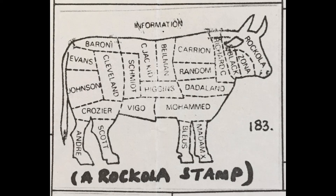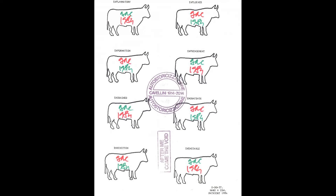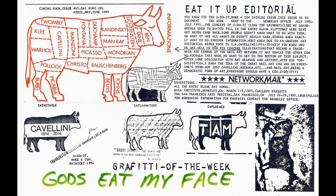It's interesting to see the worksheet of eight cow outlines that Joey, or Tom, made, because the eight contour drawings all differ slightly, though the size is consistent. A list of alphabetical words titles each cow: Inflammatory, Influence, Information, Infringement, Ingrained, Ingratiate, Inhibition, Inimitable. From this list, note the word 'information.'